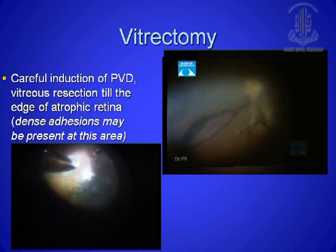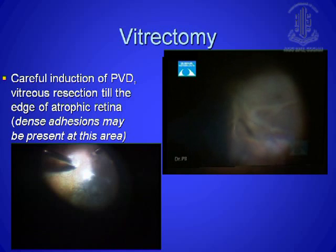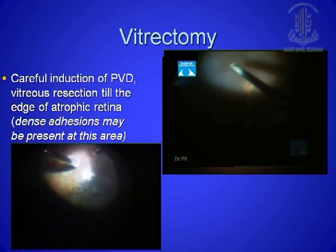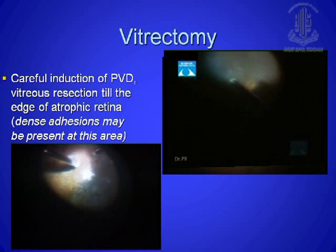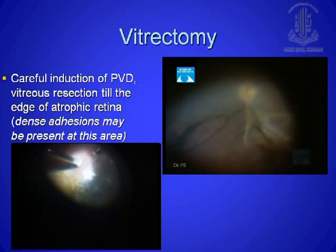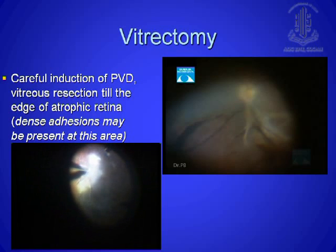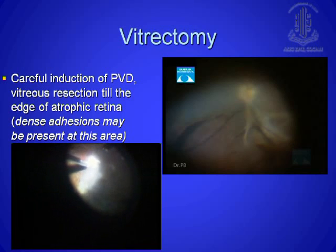PVD is really difficult here. Since it is a clear media, you again have difficulty inducing PVD, but once you get it, it is easy to manage. However, you don't try to induce the PVD beyond the normal retina, because over the scarred retina there are dense adhesions. As you can see in the lower video, the vitrectomy is not being pulled across onto the atrophic retina. After that, you have to shave the vitreous as much as possible over the atrophic retina — don't try to induce PVD there.